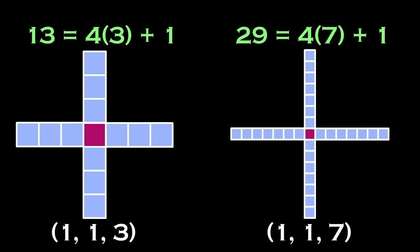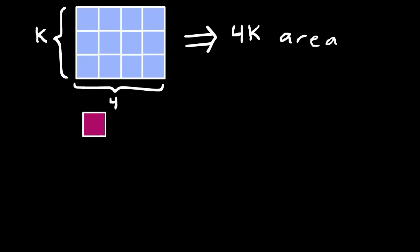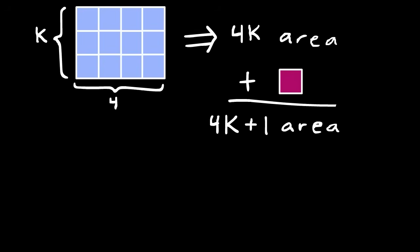Now let's see why this windmill exists for every prime of the form 4k plus 1. Each rectangle has area k and since there are 4 of them, the area overall is 4k. Then adding in the plus 1 for the central square, we get that the total area is 4k plus 1, which is exactly what we are looking for.